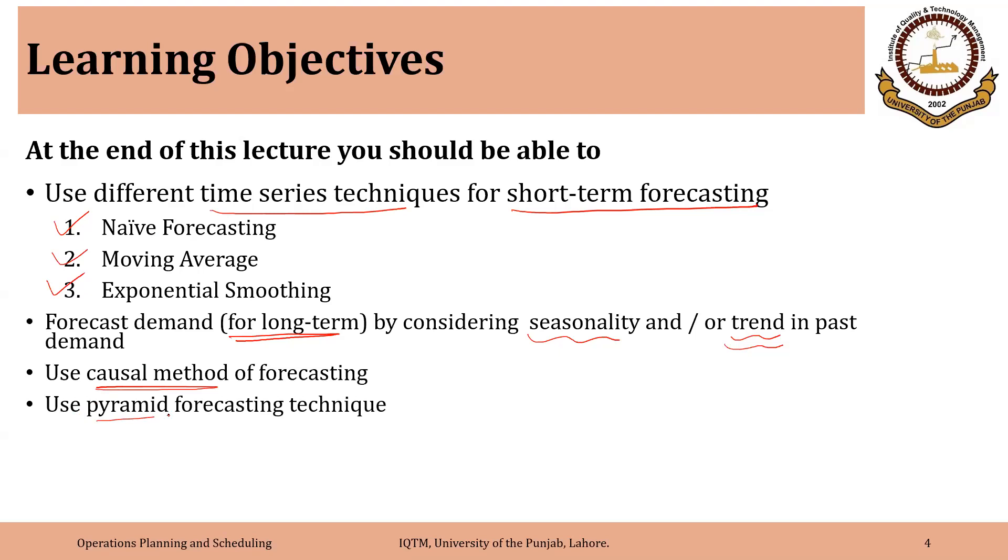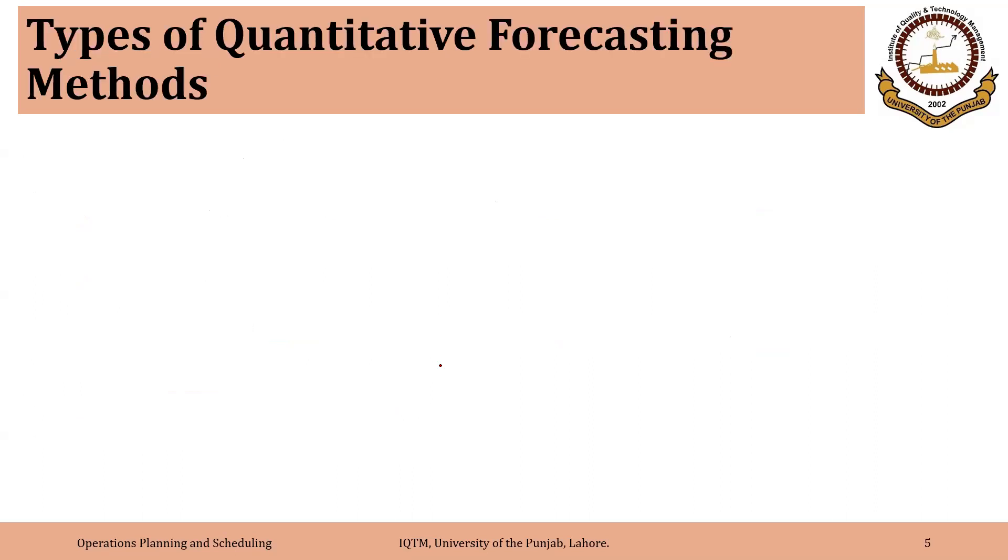Then we will discuss pyramid forecasting technique that is also very commonly used. And finally we will discuss one of the best practices for forecasting and that is also used to avoid bullwhip effect is CPFR Collaborative Planning, Forecasting and Replenishment.